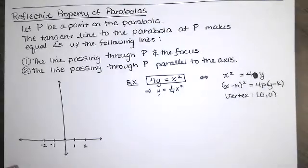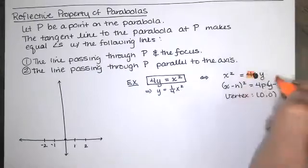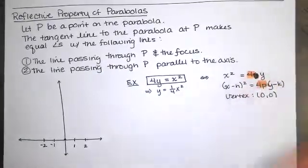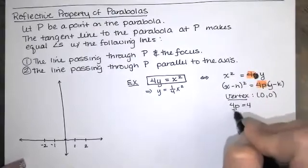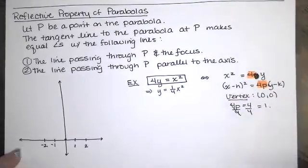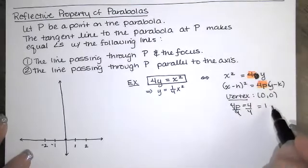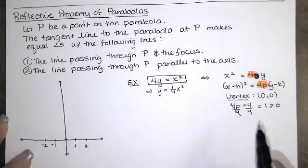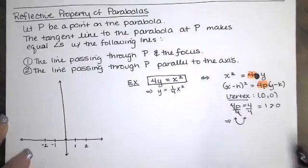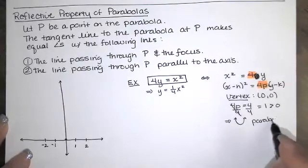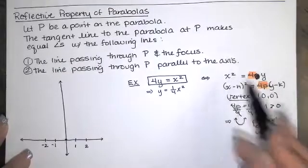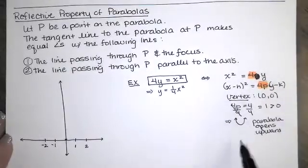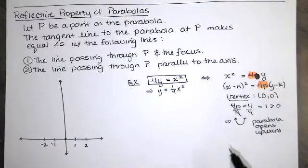From this equation we can also identify P. The easiest way is to compare the coefficient of y — that 4 — to that 4P. Those have to be the same number. So if 4P equals 4, then P must equal 1. Since P is 1 and 1 is positive, the parabola opens upward. When y is raised to the first power, the parabola opens upward or downward; when x is raised to the first, it opens left or right.